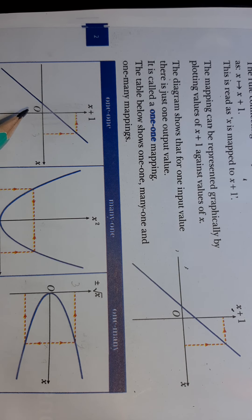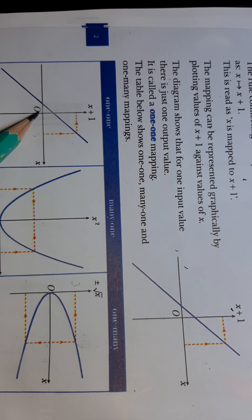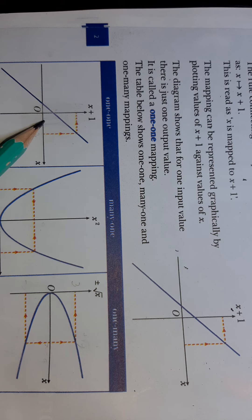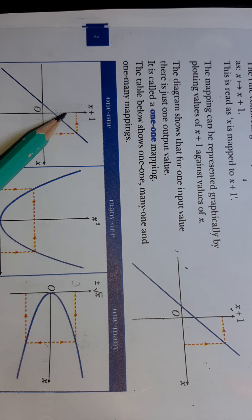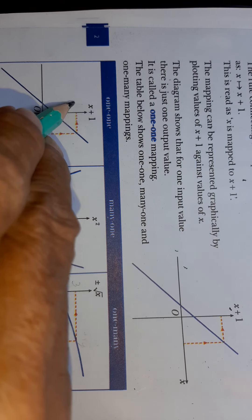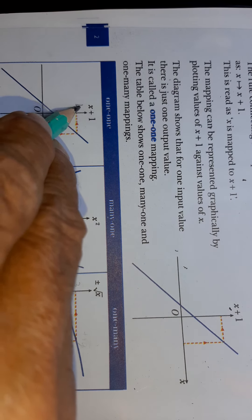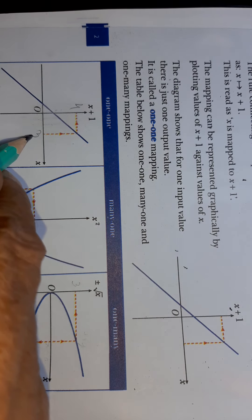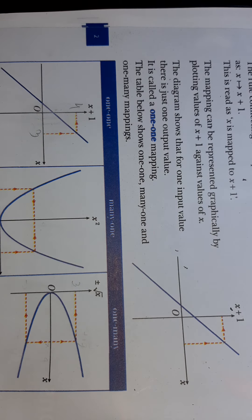If x equals zero we get y equals one, if x equals one we get y equals two, and if x equals three we get y equals four. This confirms it is a one-to-one function — for one input value there is just one output value.